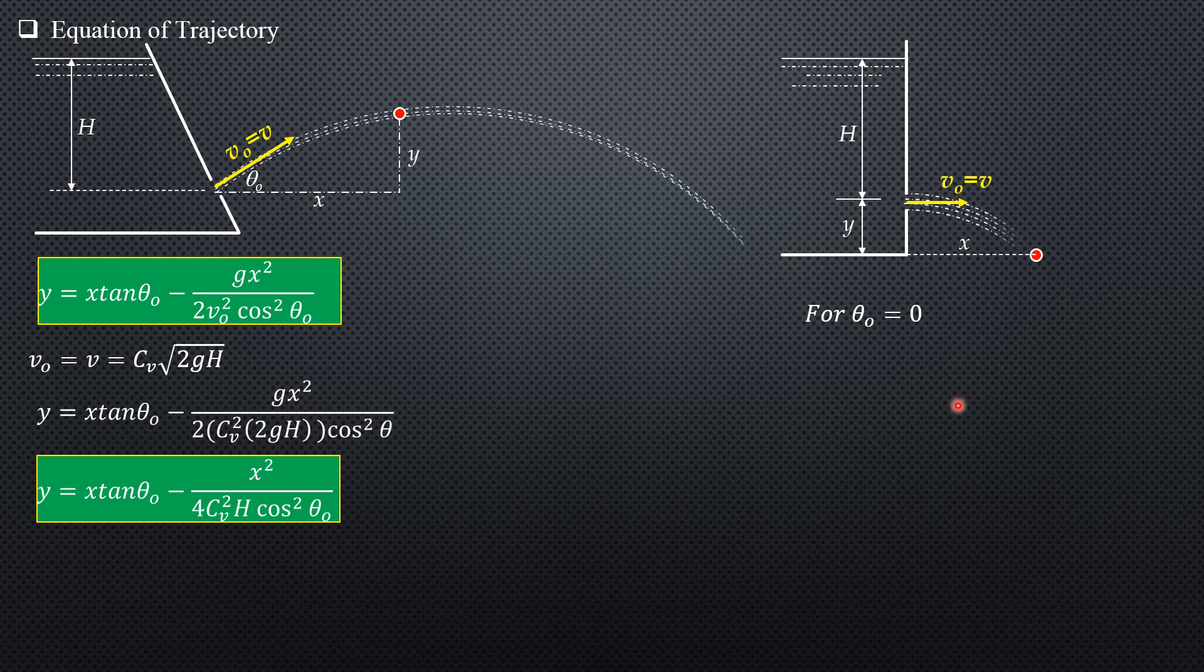So for theta_o equals zero, we substitute it here. Because the launching point is the origin, for this point y is negative. So -y = x tan(0) - x²/(4C_v²H · cos²(0)). Since cos²(0) is 1 and tan(0) is 0...